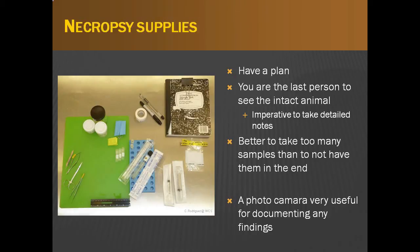Most necropsies on amphibians can be completed with a simple set of instruments and sample collection containers. It is very important to have a plan of action prior to the start of necropsy, as this will help maintain efficiency and avoid not having the supplies that you need. Remember that you are most likely the last person to see the animal intact, and documenting as much as you can is important. It is always better to collect and store too many samples than to find out later that critical tissues were not collected. Adding a camera to the necropsy kit can help document any abnormal findings and, under field conditions, any environmental factors that may have played a role in the death of the animal.